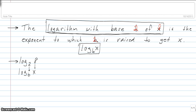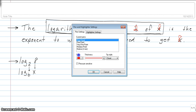is 2, is raised to get x which remember is 8. So let's say it again with the letters replaced by the numbers: the logarithm with base 2 of 8 is the exponent to which 2 is raised to get 8.